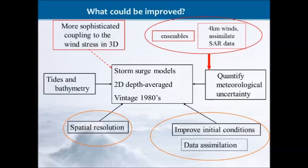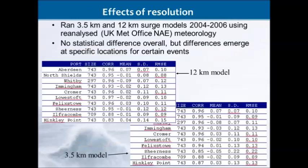The models we use for storm surge forecasting, both here in Europe and in the tropics, are two-dimensional depth-integrated equations of motion — for physicists, the shallow water equations. You can use 3D models, but then you've got choices about how many levels to use; there are certainly benefits to using a 3D model if you want to couple the wave field. We can try to improve the meteorology — that's critical — and we can look at spatial resolution and data assimilation as ways to make the models better.